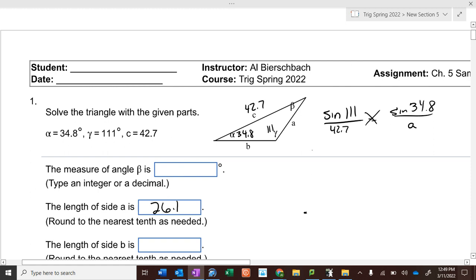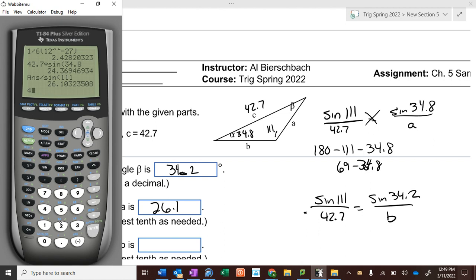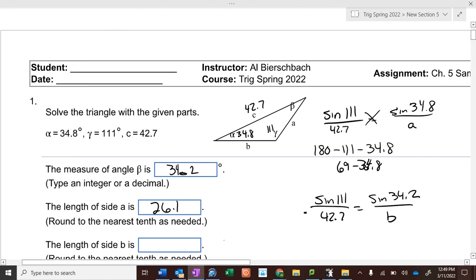How do we find what b is? 180 minus 111 is 69, 69 minus 34.8 is 34.2. Correct. So then you take the sine of 111 over 42.7 equals the sine of 34.2 over b. Cross multiply and solve, and it's 25.7.